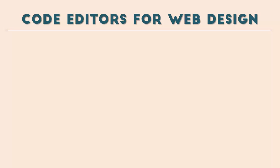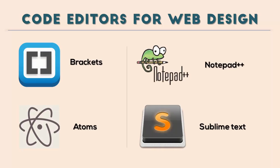These are some of the popular code editors available for web designing: Brackets, Notepad++, Atom, and Sublime Text. There are many other code editors as well. The one I use in my videos is Brackets. I also use Atom a lot. Sublime Text is paid software — you can download a trial version — but Brackets, Atom, and Notepad++ are all free.